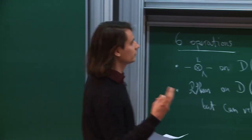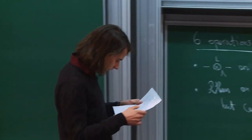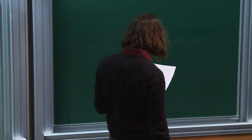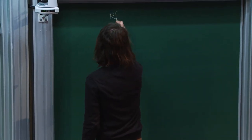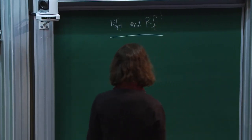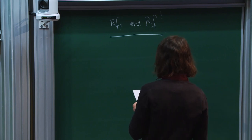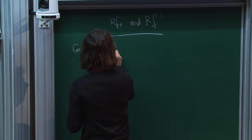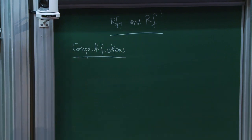This takes care of four of the operations. The remaining two are Rf_lower_shriek and Rf^upper_shriek. At the end of the last lecture I discussed the push-forward with compact supports. For this I need to talk about compactifications.